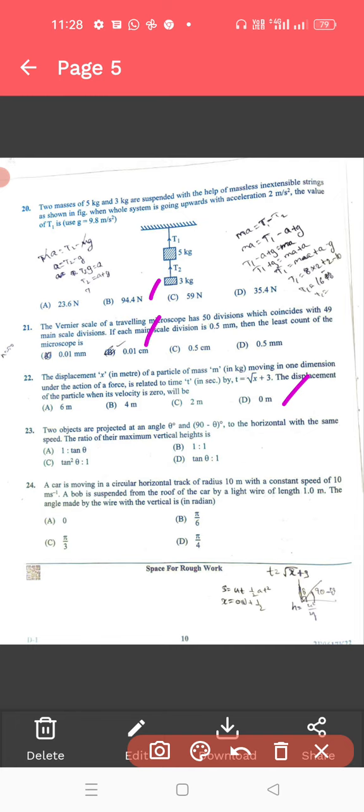23rd, the two objects are projected at an angle theta. That is, 23rd, the correct answer is tan square theta is to 1. 24, a car is moving. For 24, the correct answer is 5 by 4.